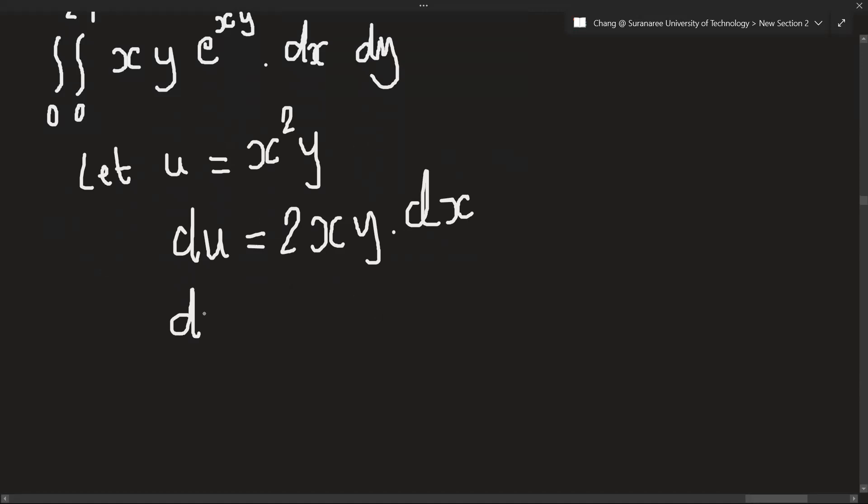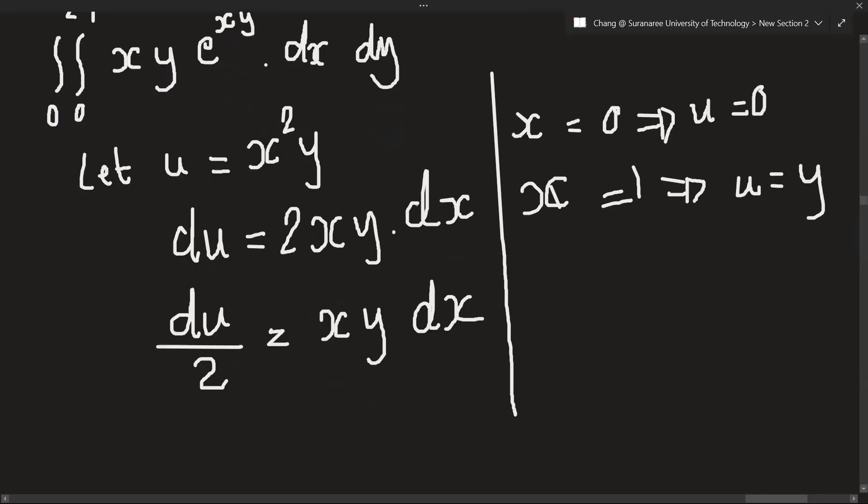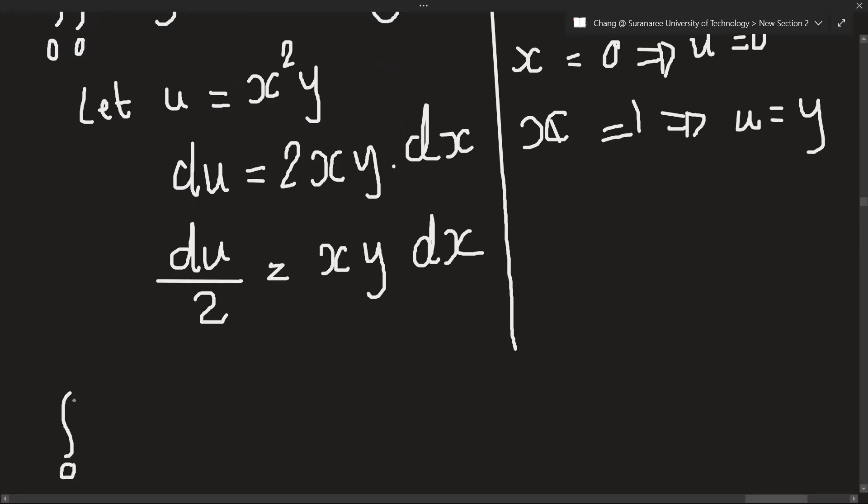So du over 2 equals xy dx. Now let's transform the interval for u. At x equals 0, u will also be 0. At x equals 1, u will equal y. So the interval of y is 0 to 2, and the interval of x can be changed to 0 to y.